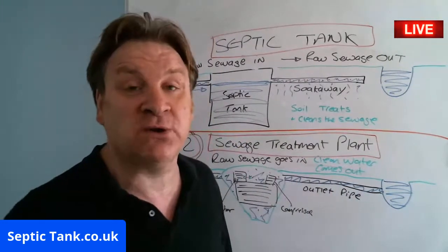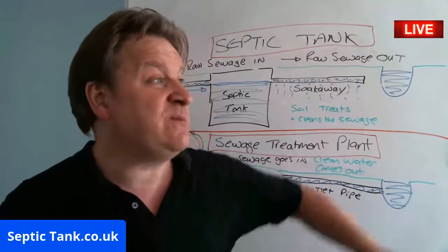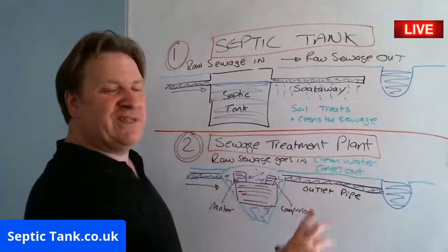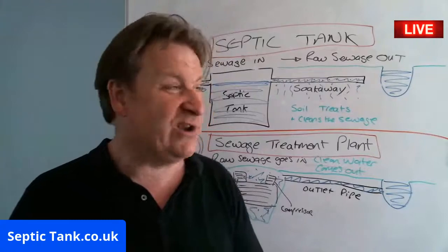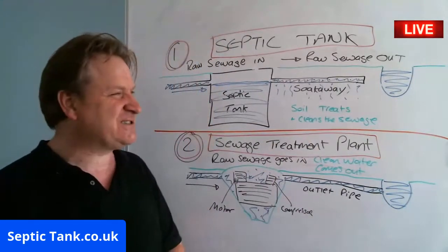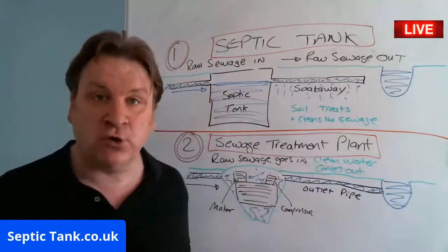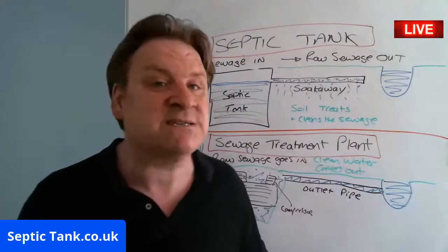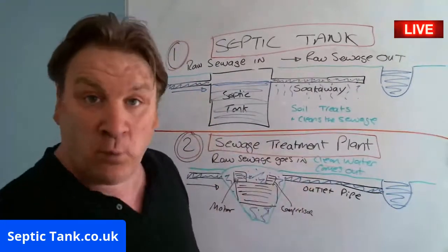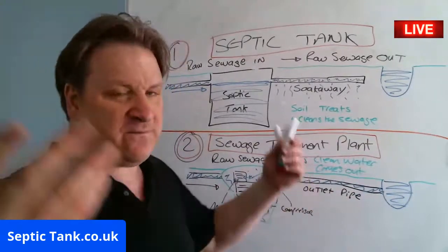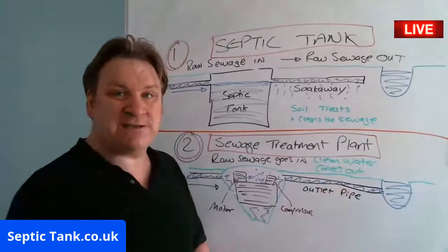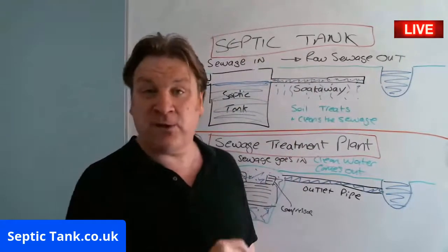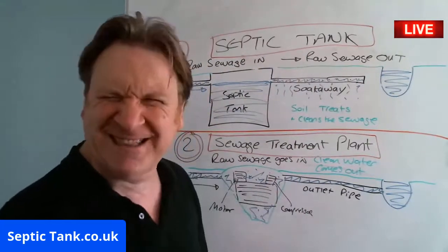However, if you don't live by a watercourse — if streams are half a mile or a quarter of a mile away — then a sewage treatment plant is overkill. You don't need one. It's like taking your kids to school in a tractor — it works, but it's unnecessary. If you don't live by a watercourse, you don't need to spend £1,500 a year on electricity bills and £300 a year on servicing. A septic tank and soakaway will be perfectly fine.